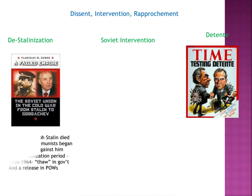Destalinization — after Joseph Stalin died, a lot of communists began to speak out against him and what a terrible life they led while he was in power. This began a period of destalinization where from 1956 to 1964 there was a thaw in government — an ease, not so strict or autocratic. They began to release POWs, prisoners of war.